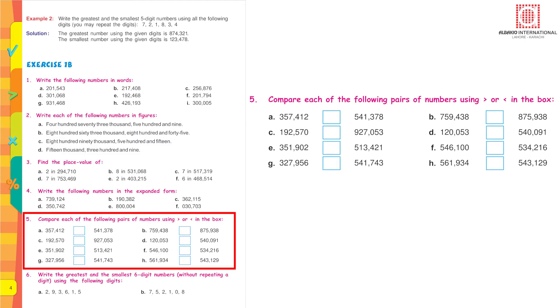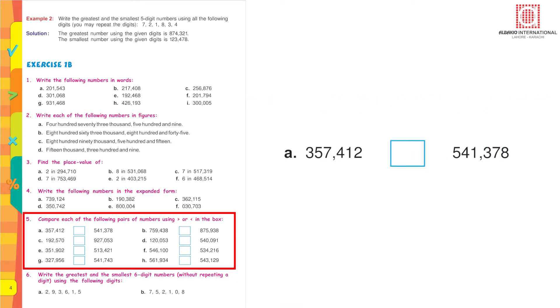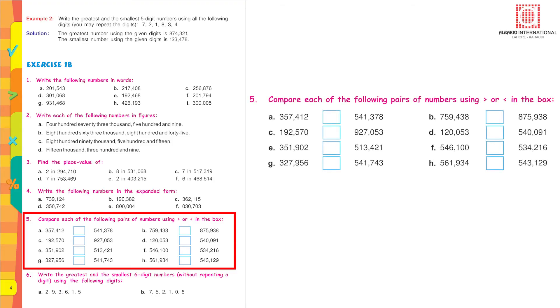Compare each of the following pairs of numbers using the sign of greater or smaller in the box. For this just remember that you have to compare the digits which are at the left most side. Now if you look at the left most side of these two numbers in first set of numbers the left most number is 3 and in the other set of numbers the left most number is 5. So which is bigger? 5 is bigger and 3 is smaller. That means 357,412 is smaller than 541,378. Try to attempt the rest of the questions yourself the way I have just explained to you.